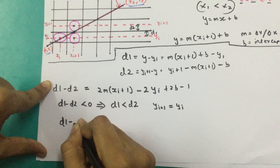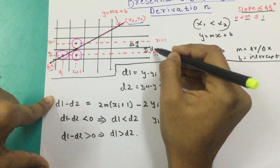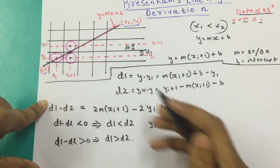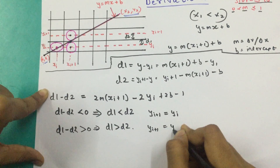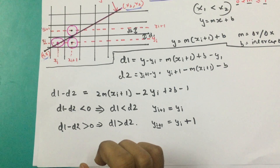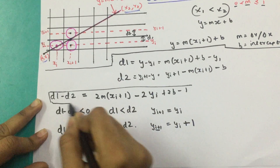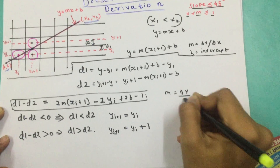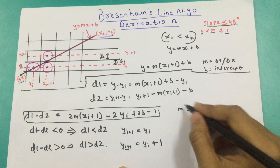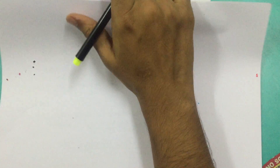However, if d1 minus d2 is greater than 0, this means d1 is greater than d2, and the line is closer to the pixel yi plus 1 — so the next pixel yi+1 equals yi plus 1. Now, since m equals delta y over delta x, and the main reason to use Bresenham's line algorithm is to avoid fractional calculations, we multiply the whole equation by delta x. Let's call this new quantity pi, so pi equals delta x times (d1 minus d2).